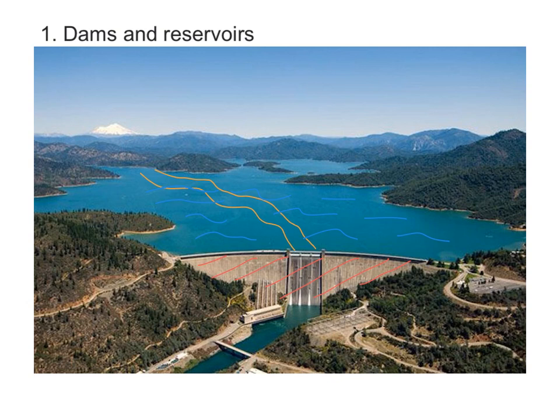The water can be extracted for irrigation — that's farming. And also the water can be released slowly through the dam wall, creating hydroelectric power. So a very effective way of managing floods with other benefits.